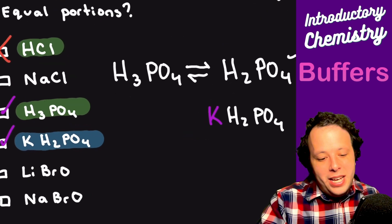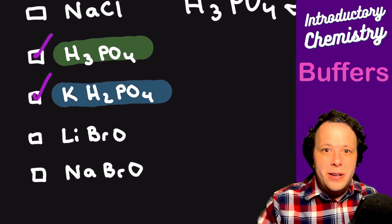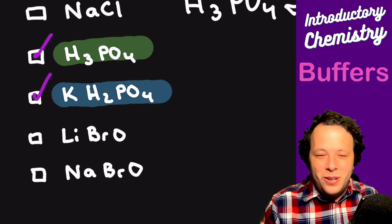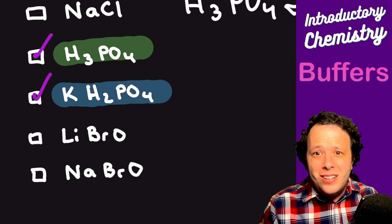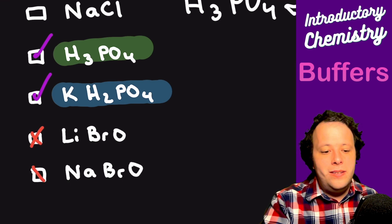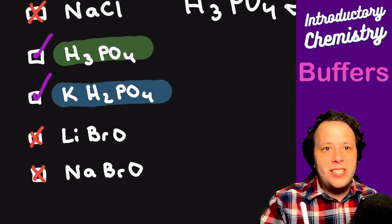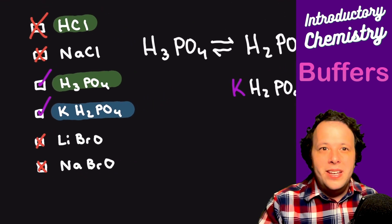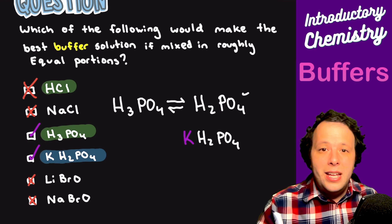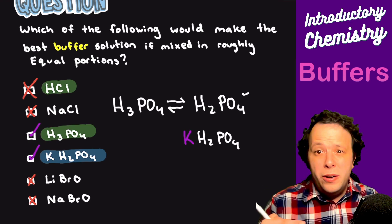What about the last one? We have lithium with LiBrO, and then NaBrO. They're both salts, but neither one of them is an acid, so that's a no-go. And NaCl is just a salt, so that's not okay either. So we have our pair. That's the whole idea—can we try to pick which one we have?